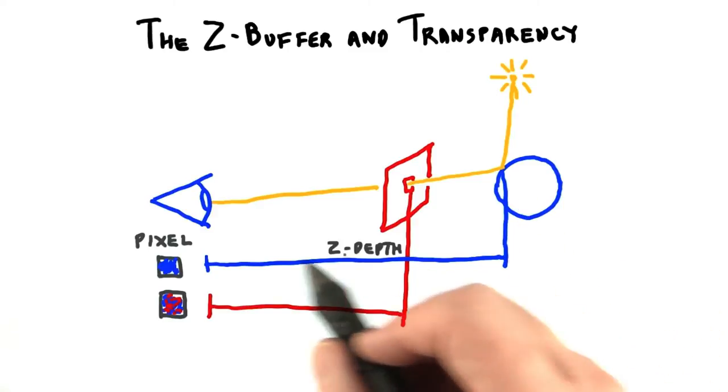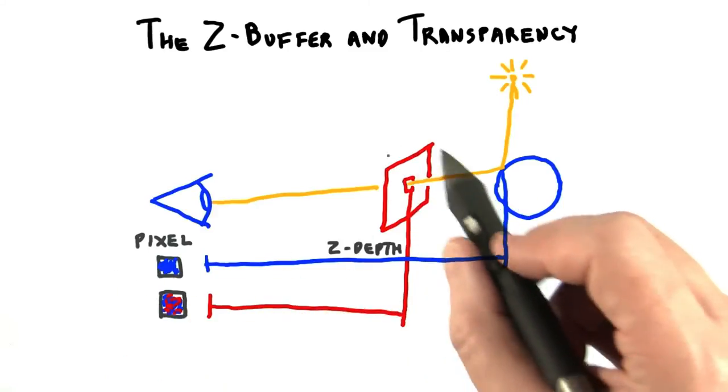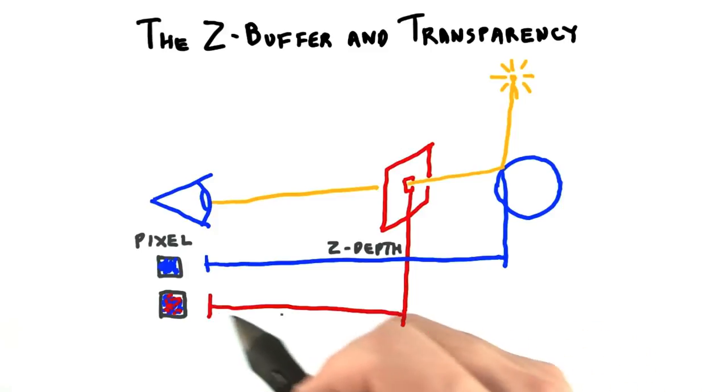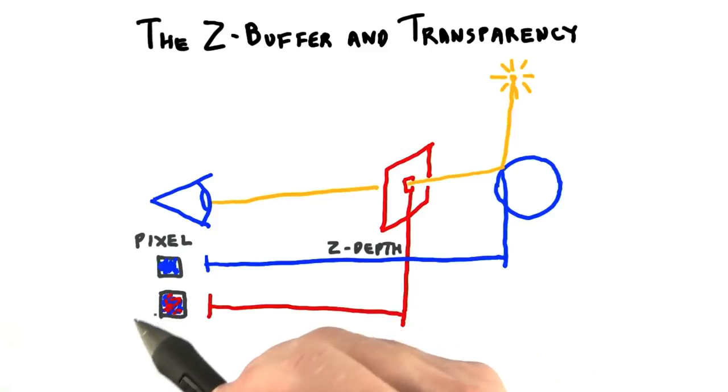Say we draw the blue far object first, then draw and blend in the red transparent object. This works fine. The blue object's color is taken and blended with the red fragment that is drawn.